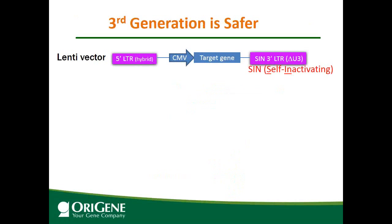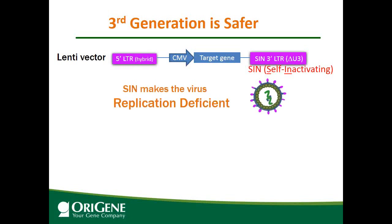Because the packaging plasmids don't have the LTRs and packaging signals, they will not be packaged — so the particles are pseudo-particles, not wild-type particles. They don't have any viral gene in them; they only contain the lentiviral vector carrying your gene of interest. The third generation is even safer: the 5' LTR is a hybrid so no viral transactivator TAT is needed. The 3' LTR is a SIN LTR because it has a deletion in the U3 region — SIN stands for self-inactivating. This deletion can be transferred to the 5' end after integrating into the host cell, making the virus unable to replicate.